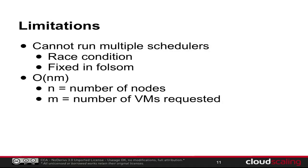The second limitation is this O(NM) complexity. NM is the number of nodes times the number of VMs requested. Each time, you have to consider all the physical compute nodes available, and each VM is scheduled separately. So if you launch 100 VMs and you have 100 nodes, that's a lot of scheduling.